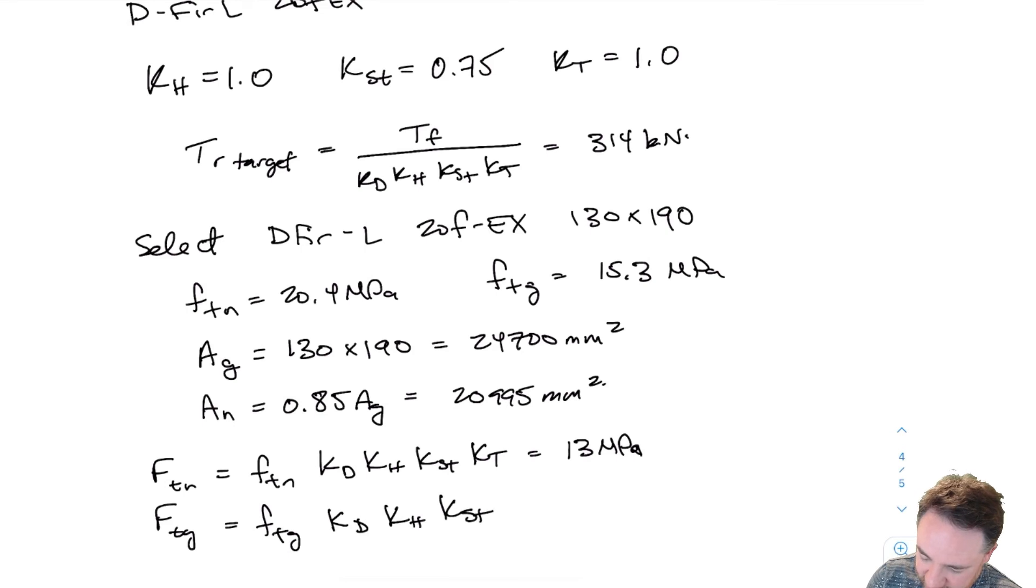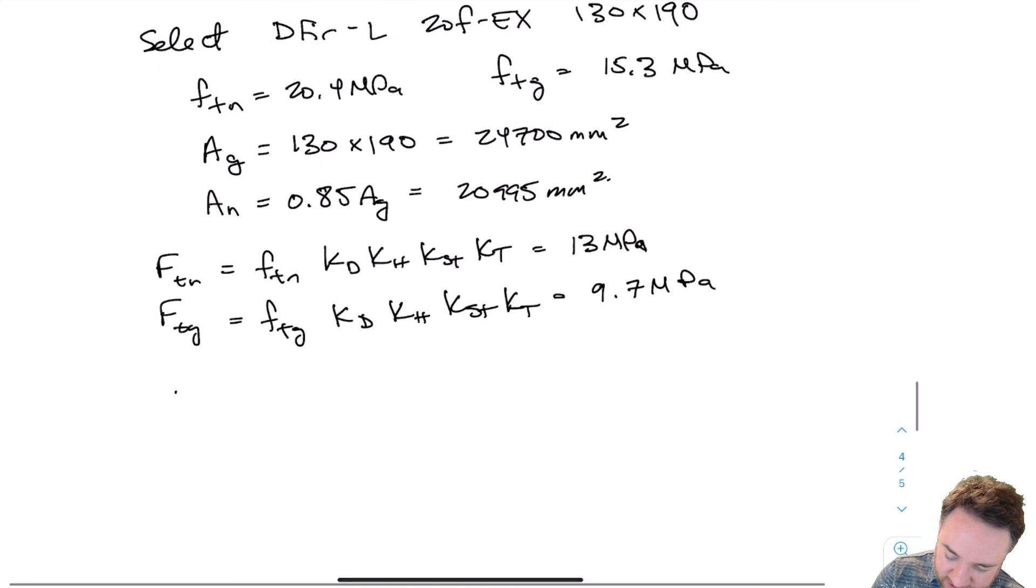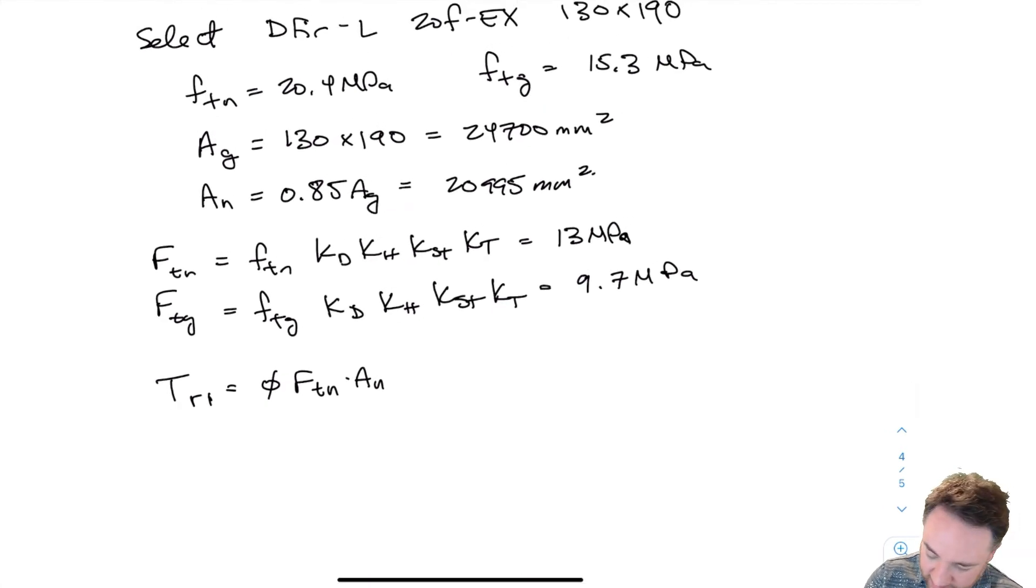Now I can do the tension resistance equation, which is phi FTN times AN. This was TR1. If I do that, and phi is 0.9 if you'll recall, then I get a strength of... This is 0.9, FTN is 13, AN was 20,995. I'm going to get 245,600 newtons, so I get 245.6 kilonewtons.